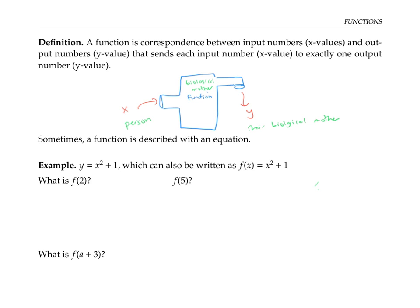But if I change things around and just use the mother function, which sends to each person their mother, that's no longer going to be a function, because there are some people who have more than one mother — they could have a biological mother and an adoptive mother, or a stepmother. So since there are at least some people who, as input, would give more than one possible output, that violates the rule of functions — it would not be a function.